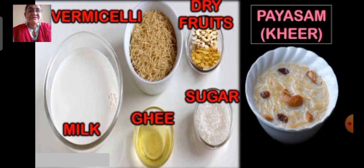Next, if you want to make payasam or kheer, you require milk, vermicelli, ghee, sugar and dry fruits.